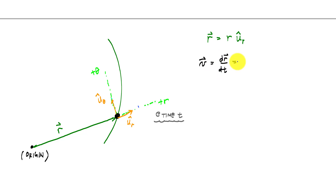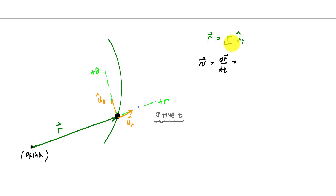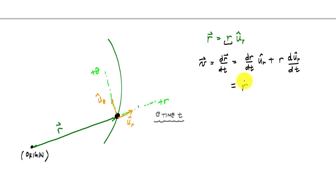The thing to note here is that this unit vector is also a function of time because it changes direction with time. So if this particle is moving on the path, the direction of that unit vector is also changing. So I have to apply the chain rule. I take the time derivative of the first part, which gives me r_dot times u_r_hat, plus r times du_r_hat/dt — written in short notation as r_dot u_r_hat plus r times u_r_dot.